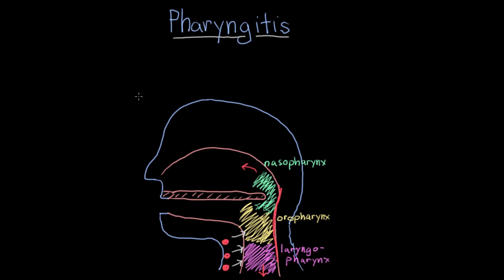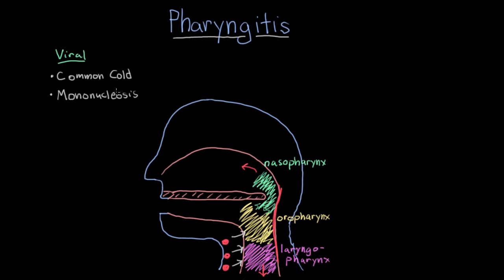Now who are the major culprits that cause pharyngitis? Most commonly, pharyngitis is viral. The viruses that usually cause pharyngitis are the viruses implicated in the common cold. Other viruses that can cause pharyngitis are those that cause mononucleosis — also known as mono, or in layman's terms, the kissing disease. A lot of teenagers end up getting mono, and this is primarily caused by either EBV (Epstein-Barr virus) or CMV (cytomegalovirus). These two are very contagious viruses, so they're easily passed in the saliva of teens.